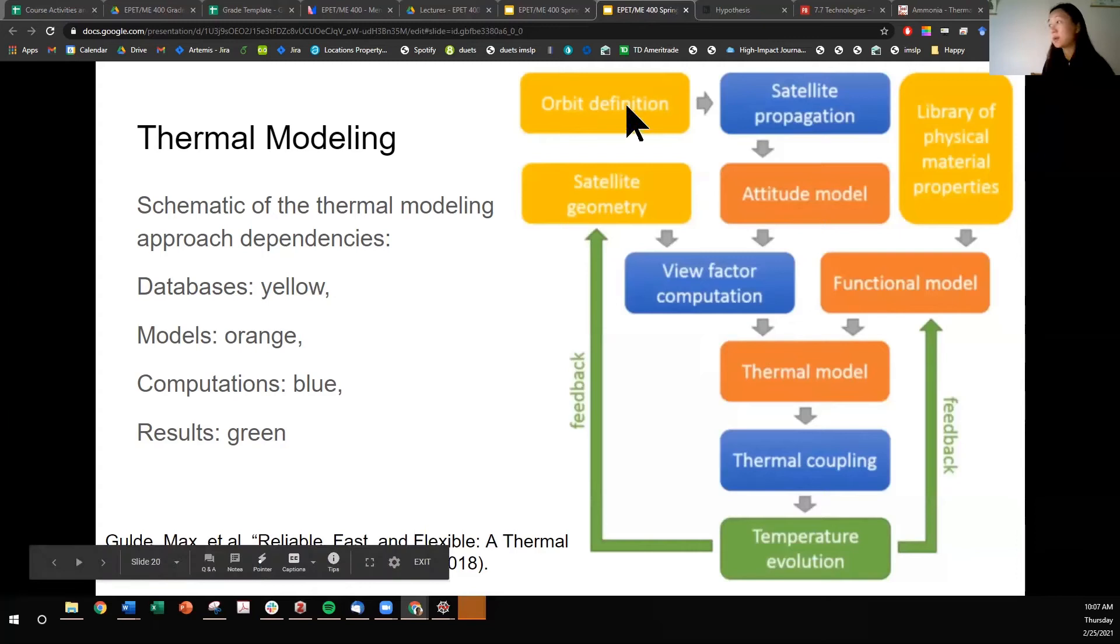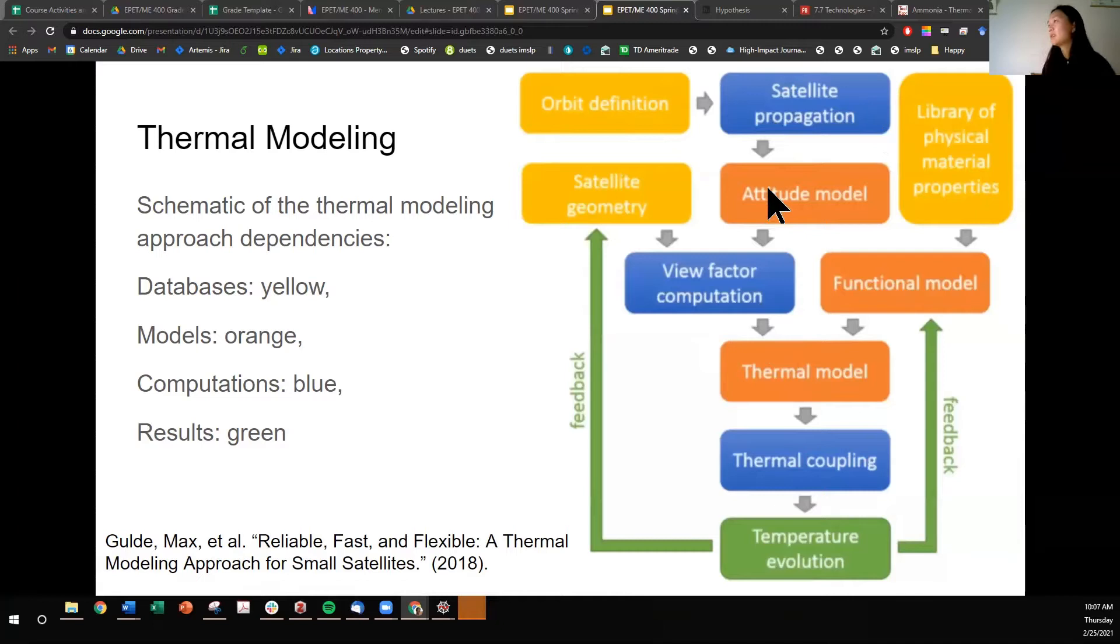Where your orbit definition is going to, you'd have to propagate your satellite's orbit and attitude, your satellite geometry, you're going to have to figure out the view factor. So remember we are talking about how the earth's albedo, the amount of heat transferred through earth's albedo is dependent on view factor. So that would probably be a computational script that you put in the loop.